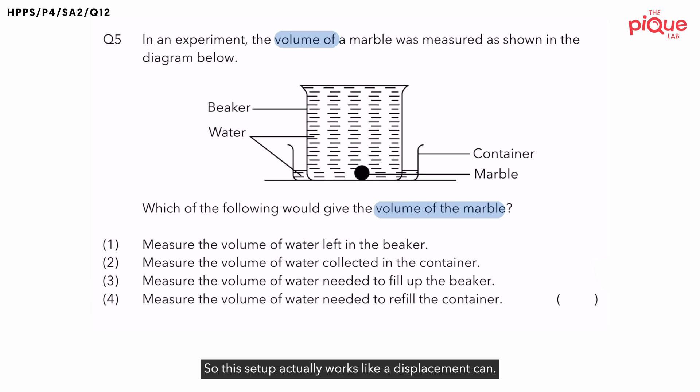So this setup actually works like a displacement can. What happens is that the person will fill the beaker with water to the brim. After that, he will drop the marble into the beaker of water. Now my question is, what will happen to the water in the beaker once the person drops the marble into the beaker? We will all know that the water in the beaker will overflow. So where will it overflow into? It will overflow into the container.